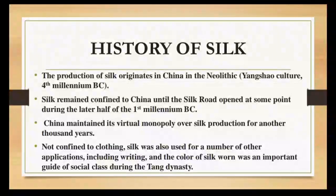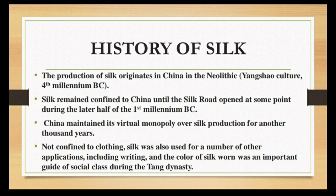This is a very interesting slide about the history of silk. The production of silk originates in China in the Neolithic Yangshao culture around 4000 BC. Silk remained confined to China until the Silk Road opened during the later half of the 1st millennium BC. China maintained its virtual monopoly over silk production for another thousand years.